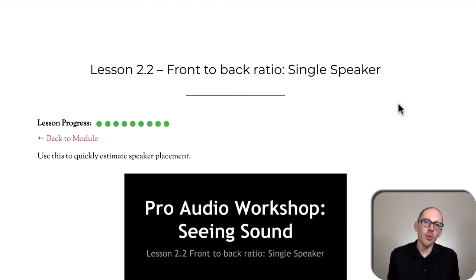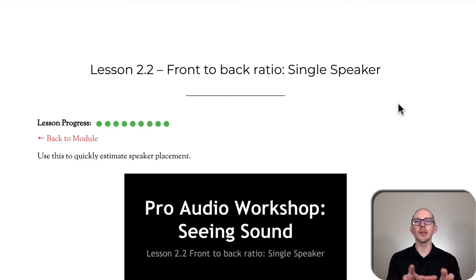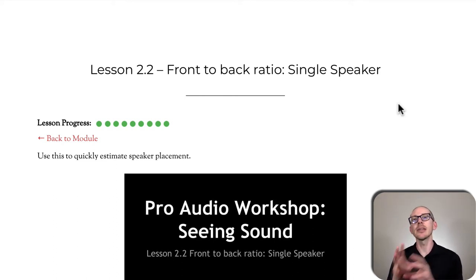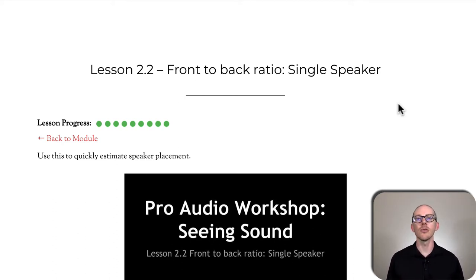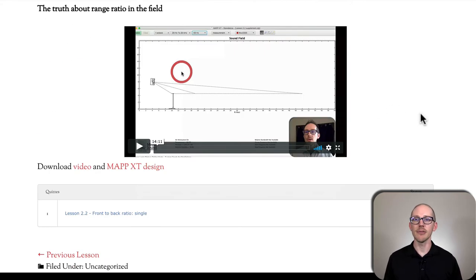If we're not doing a multi-element array, maybe we just want to know what our level variance is going to be from front to back with a single speaker. Is this design even going to work? This is where we're going to start coming up with some design guidelines and design criteria as it relates to front-to-back distance ratio. I explain some stuff about fractions — fun math things.